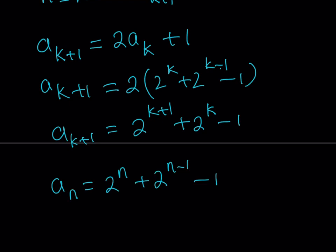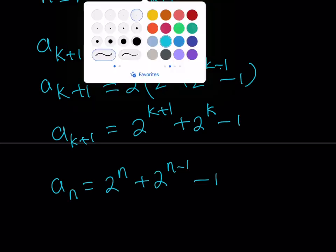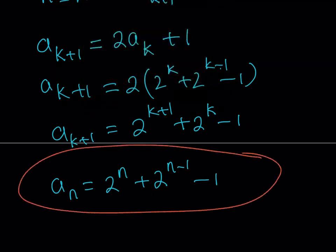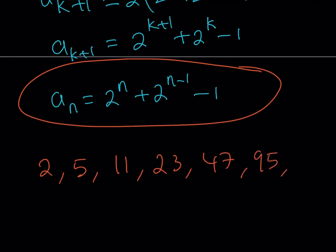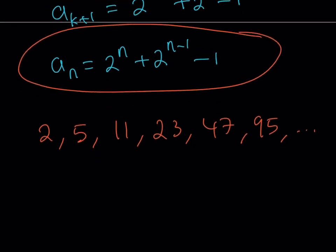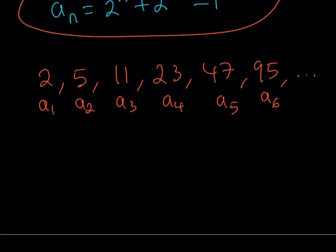Now let's talk about the second part of this video — how to come up with this formula, because it didn't just come out of the blue. There is a way to arrive at this answer. We're going to list these terms again. The first term was 2, double and add 1 gives 5, double and add 1 gives 11, then 23, then 47, then 95. These are a_1 through a_6, indexed, and everything looks good. My goal is to come up with this formula.